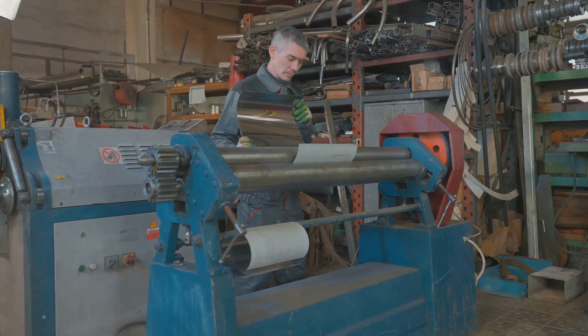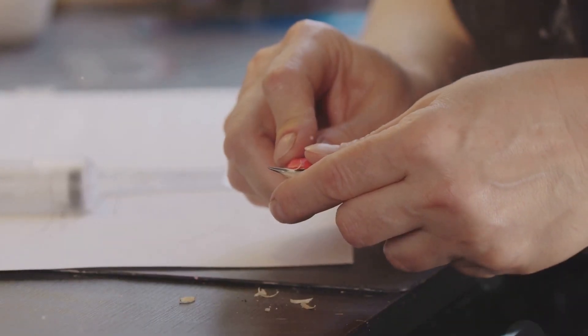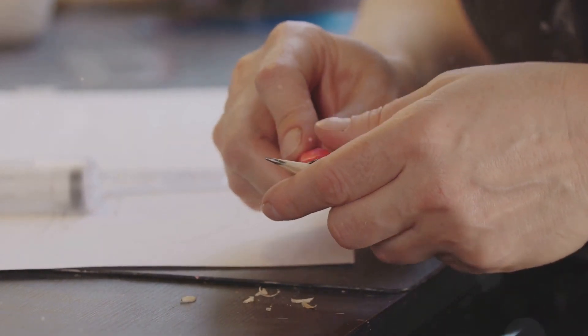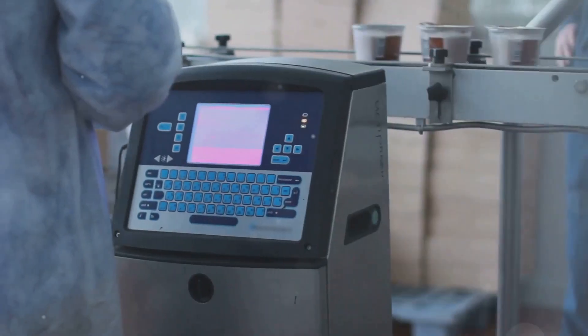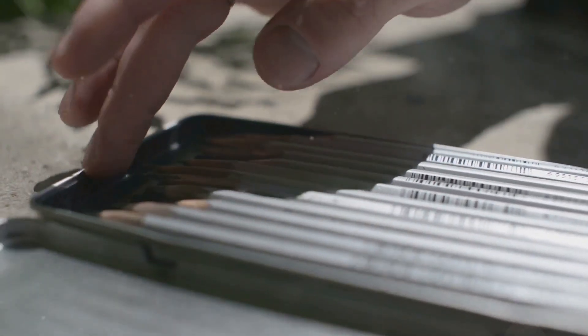Once the glue has dried, the sandwich is fed through a shaping machine. This machine carves out individual pencils from the glued slats, giving them their characteristic hexagonal or round shape. Each pencil is then carefully inspected to ensure that the lead is centered within the wood and that there are no imperfections in the casing.